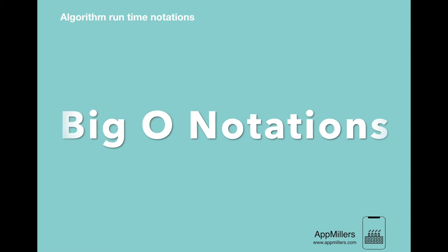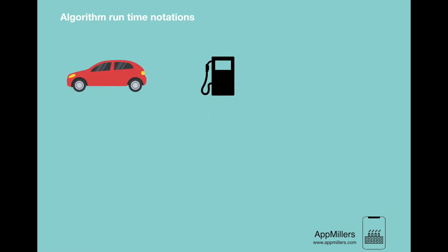To understand different notations that are used to measure the performance of algorithms, let's look at a real-life example. Let's say we want to buy a brand new car, and obviously we want to know more about the performance of the car, which means we are interested in how many liters of petrol it takes to drive 100 miles. Now, in case of a car, there is not a standard answer for this question.